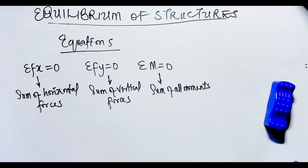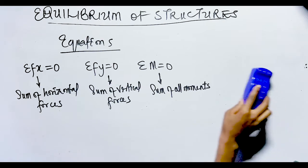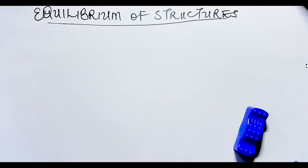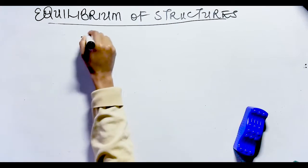This simply indicates that the resultant couple is zero and the resultant forces are zero. So ΣM = 0 means the summation of all moments must equal zero. That covers the equations of equilibrium, and we now move on to the last topic for this lesson: types of supports.